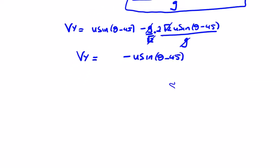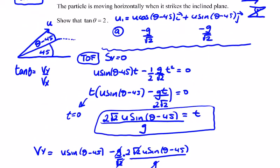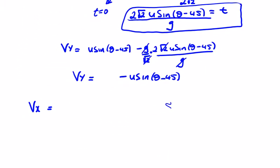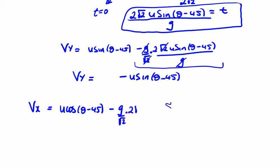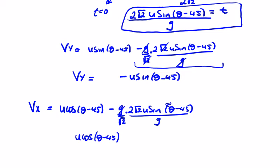Then the velocity of x: v_x = u cos(θ-45) plus a·t. The a·t term gives the same value as before — g/√2 times 2√2·u sin(θ-45)/g — which tidies up to u cos(θ-45) minus 2·u sin(θ-45).